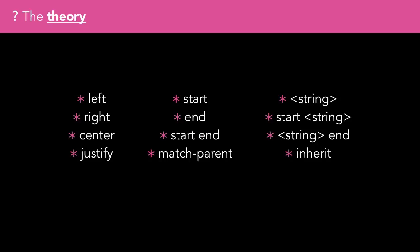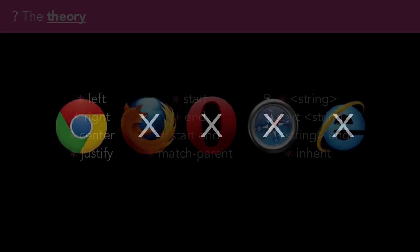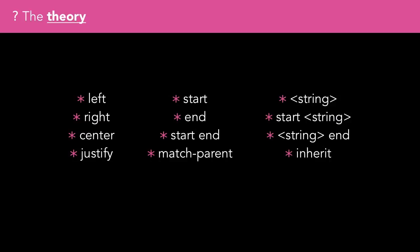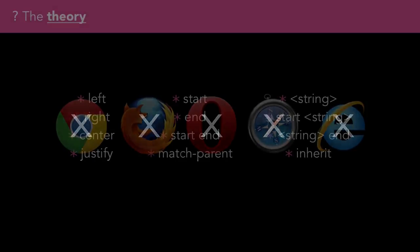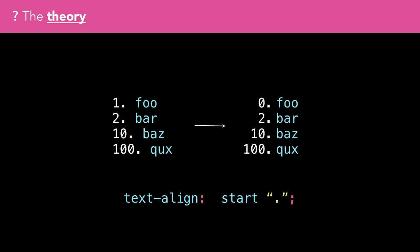The match parent value is very similar to inherit, but the start and end are calculated according to the parent's direction. This value has poor browser support, but does work in Chrome. The string values allow alignment to be determined by an arbitrary string of text. This value is currently not supported in any browser, so I wasn't able to test it. The example on MDN sounds quite useful though, to align a decimal value on the full stop string, which could look a bit like this.